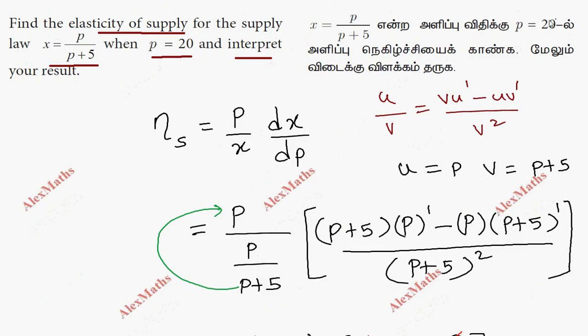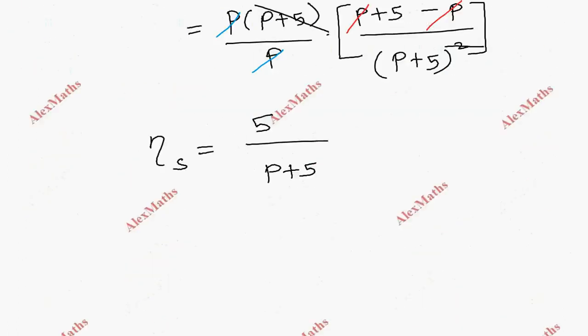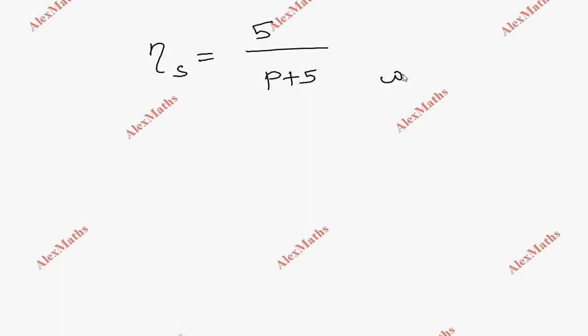The question is when p is equal to 20. So p is equal to 20: 5 by 20 plus 5, 5 by 25, which cancels to 1 by 5, divided by 0.2.